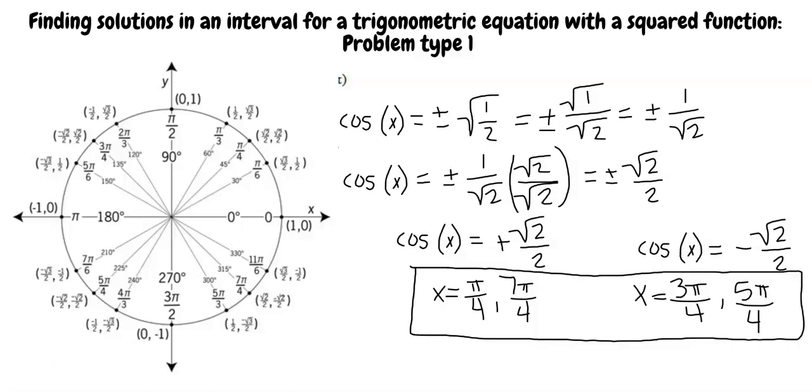This means that the solutions for x are π over 4, 3π over 4, 5π over 4, and 7π over 4.